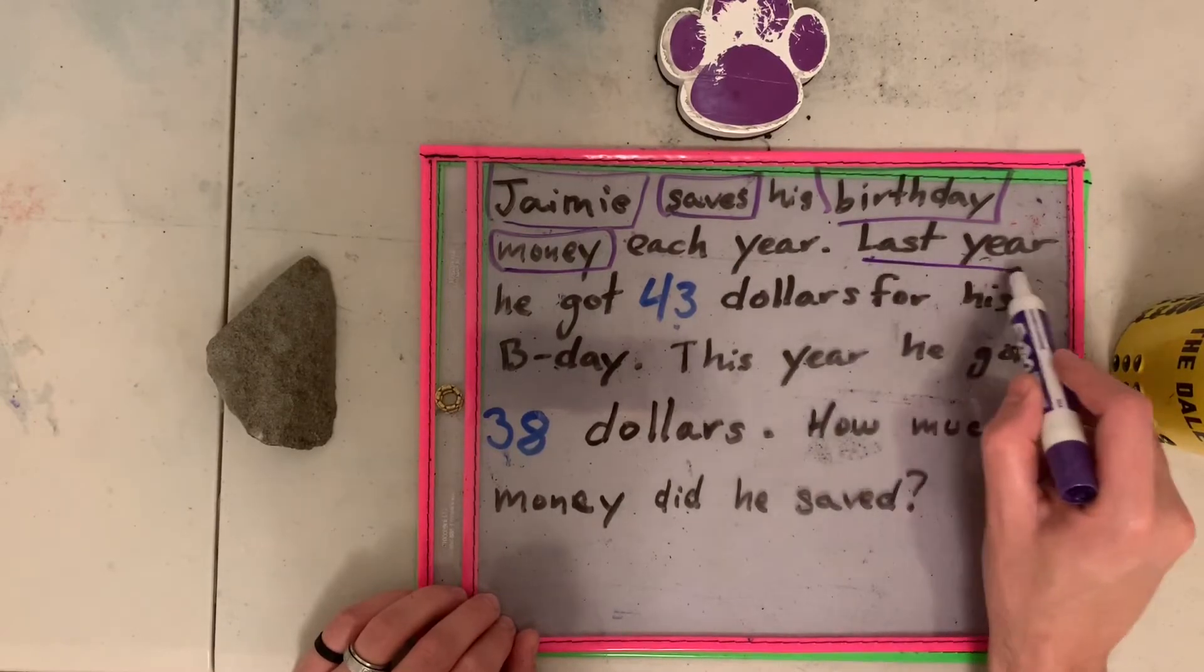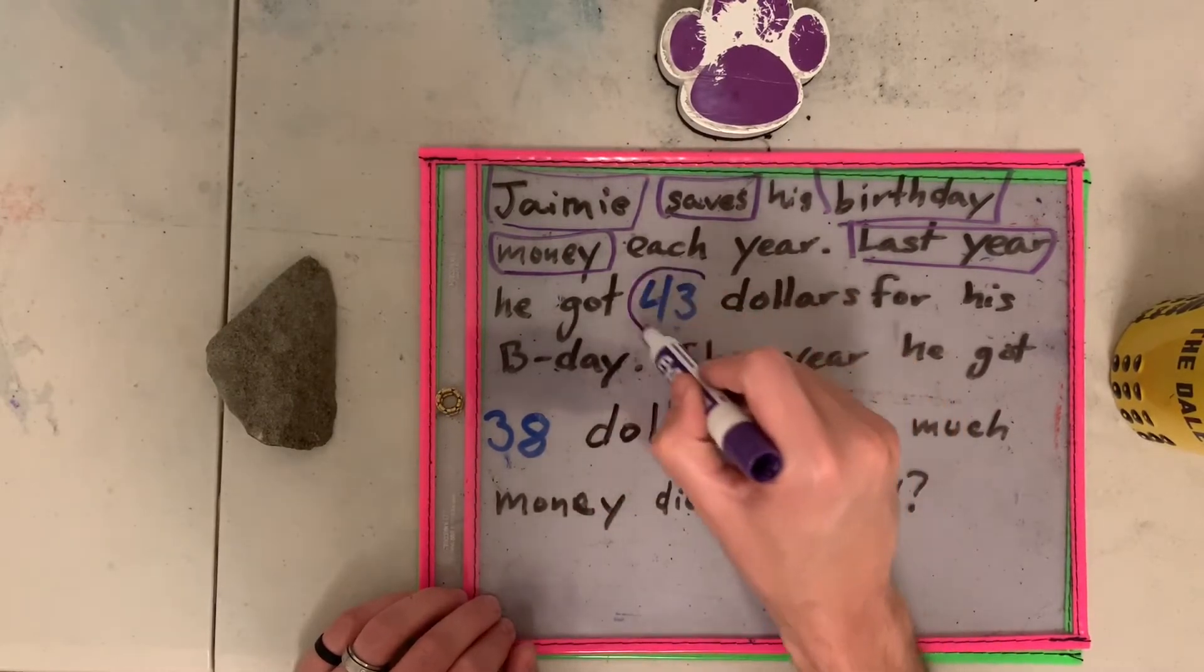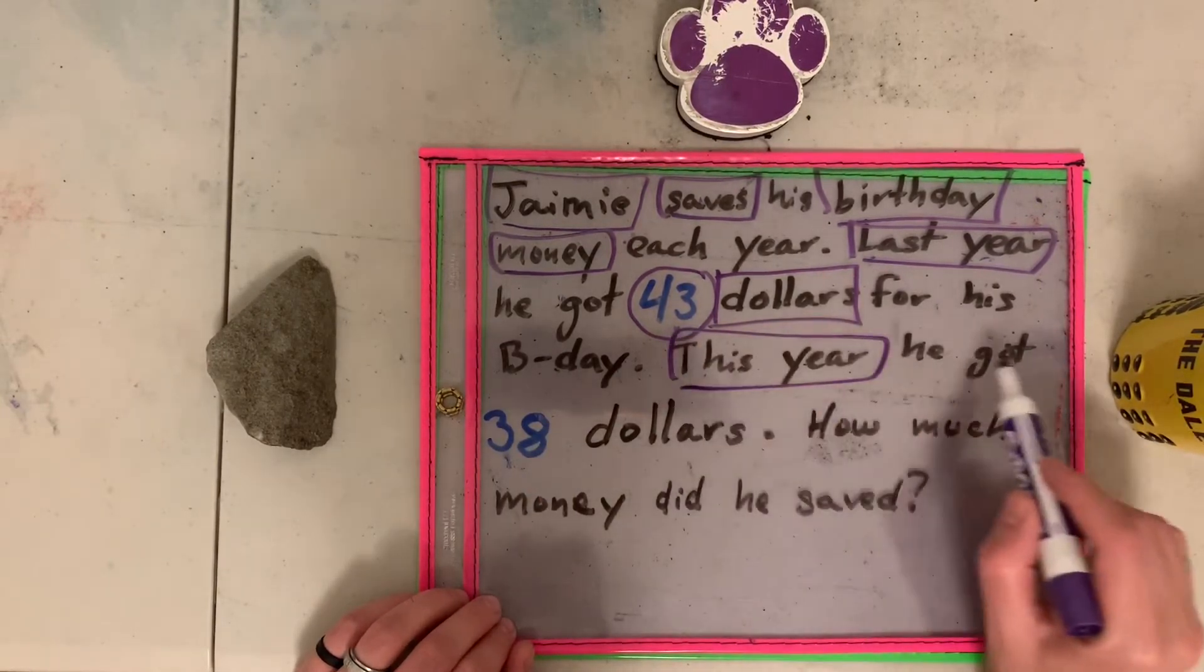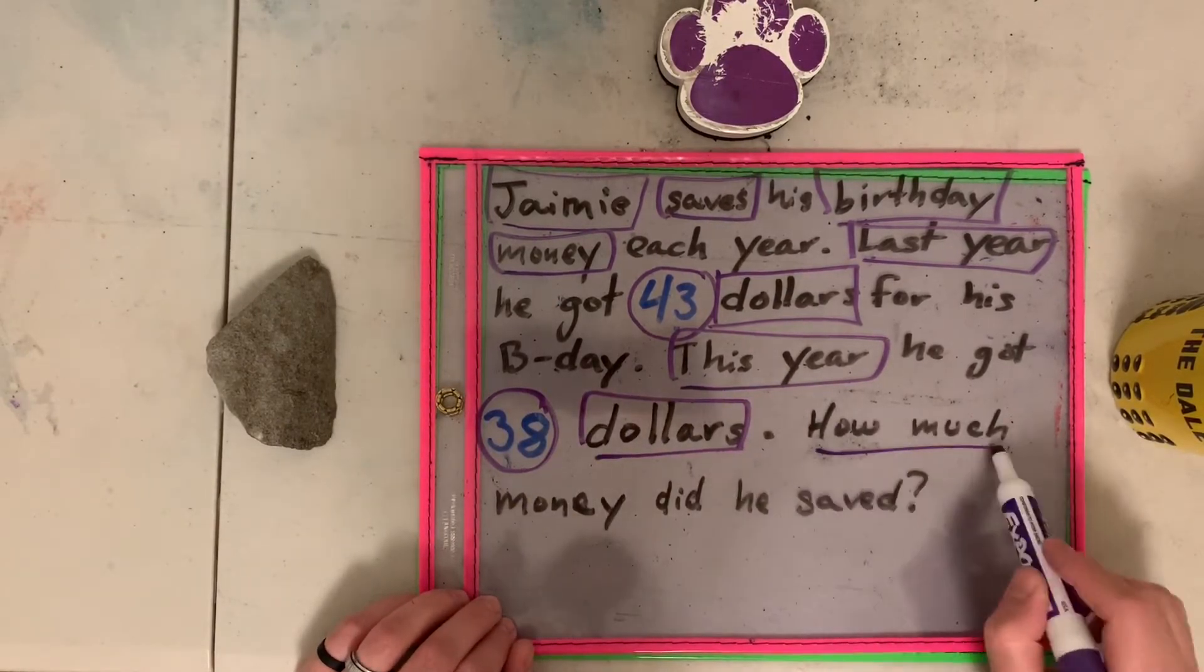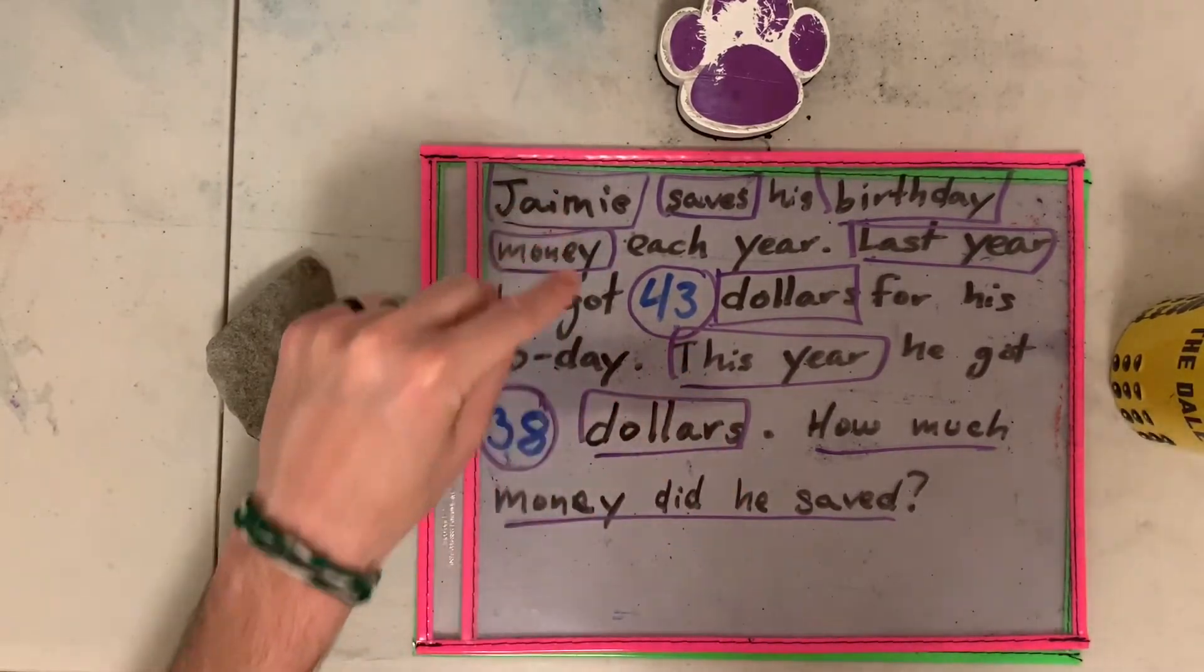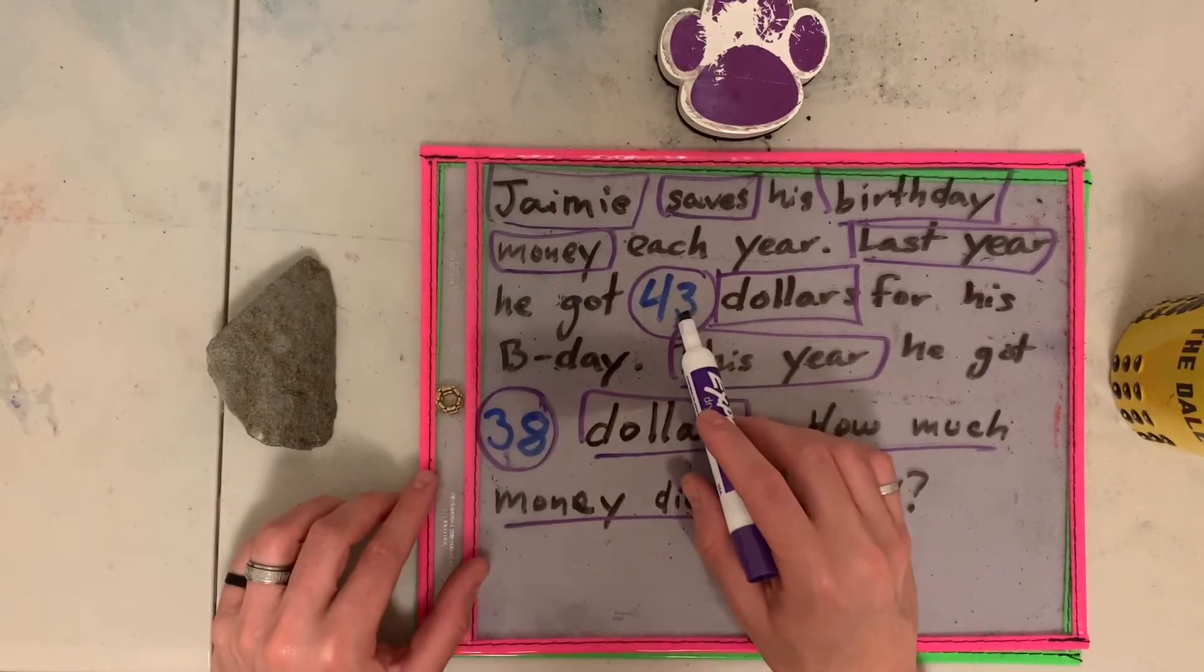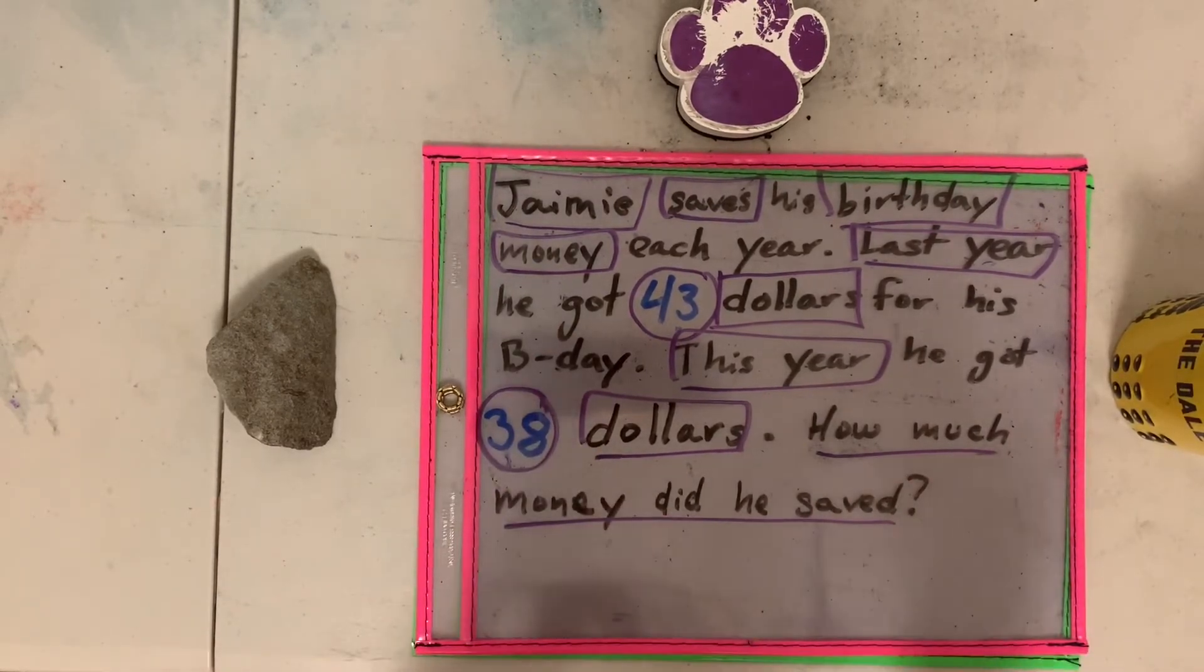Here's this. Jamie. So we're talking about Jamie. Saves. Remember the word saves? Means ahorrar. Que está guardando dinero. Saves his birthday money each year. Last year. El año pasado. Cuando estaba en primer grado. When he was in first grade. He got forty-three dollars for his birthday. This year he got thirty-eight dollars.